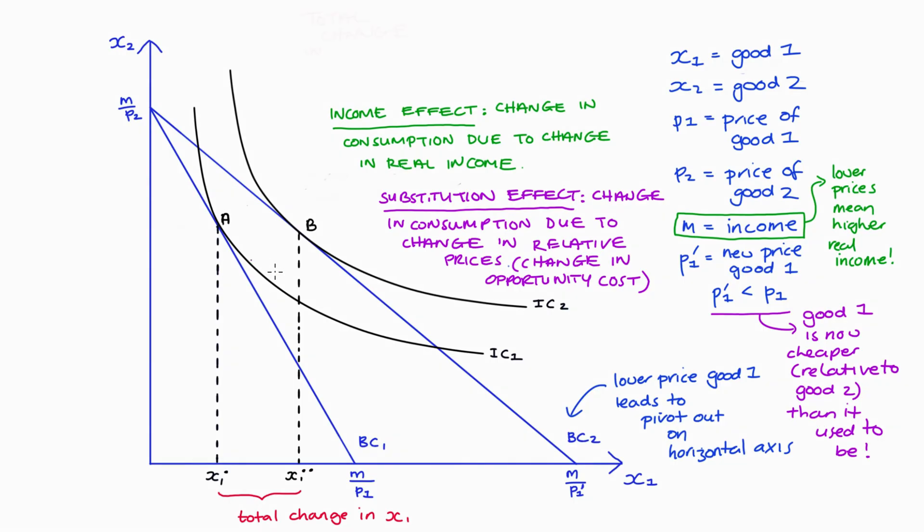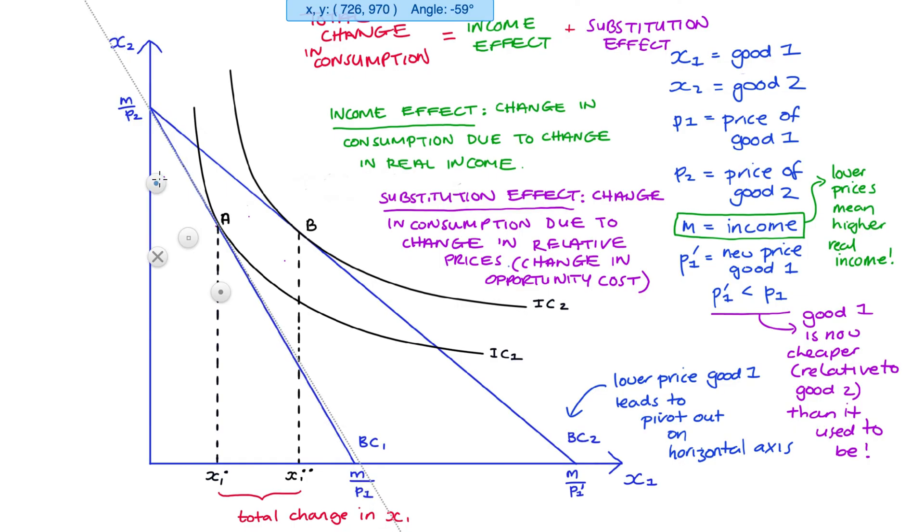So we're going to divide the total change in our consumption of good one into the sum of our income and substitution effects. In terms of our diagram we can start by seeing the substitution effect and what we're going to do is we're going to pivot the budget constraint around the indifference curve until we have a new interim budget constraint which has the same slope as our new budget constraint or BC2 but we're going to stay on the original indifference curve. Essentially what we're trying to do here is change the relative prices or the opportunity cost but we're keeping our level of utility constant.